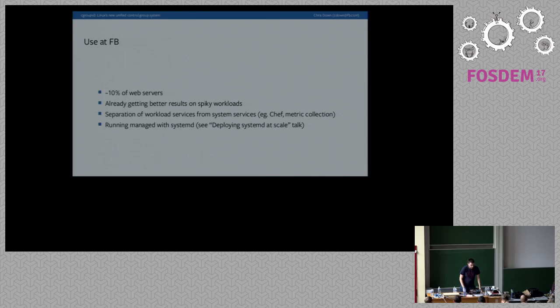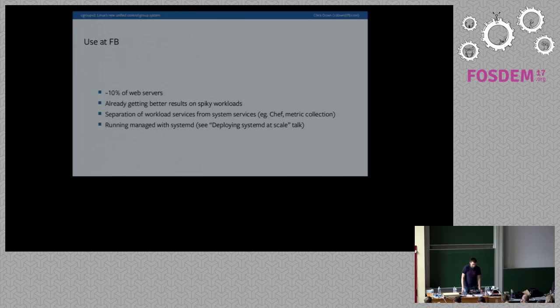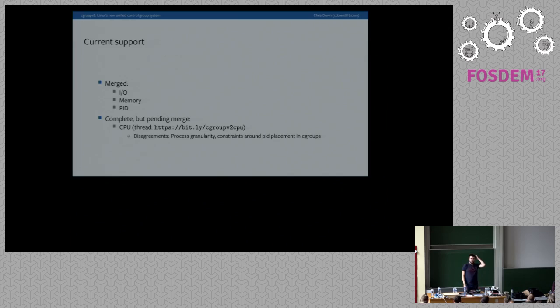If you go to facebook.com right now, there's a one in ten chance you'll hit a server with cgroup v2. We're running a cgroup v2 pool in the tens of thousands of machines. My main concern is limiting the failure domains between services — making sure we don't have cascading failures on a machine — and managing resource allocation in the data center. At Facebook scale, even a small improvement in resource efficiency is a really big win. We run cgroup v2 managed with systemd. My teammate David Capico did a talk at systemd.conf called 'Deploying Systemd at Scale.' We have two of the core maintainers working at Facebook and will continue to drive innovation here.